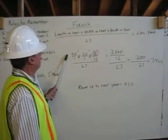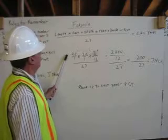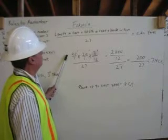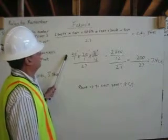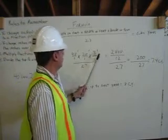Now we multiply the top numbers. 40 multiplied by 20, multiplied by 3, that will give us 2400.